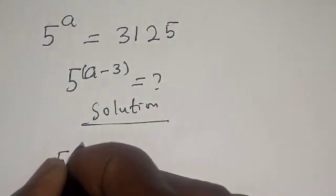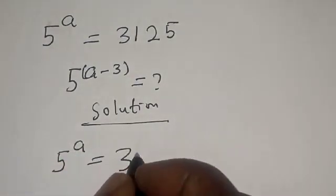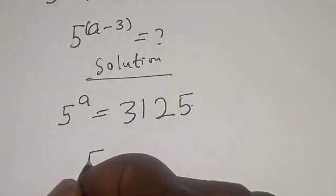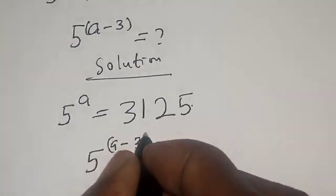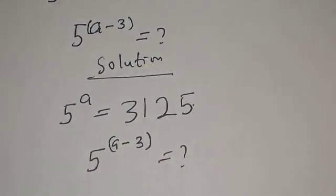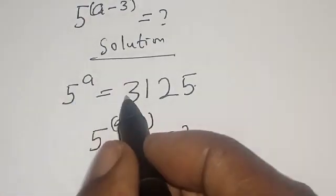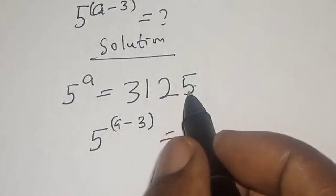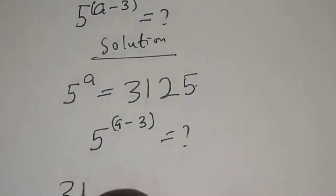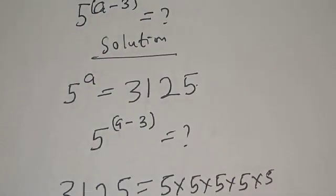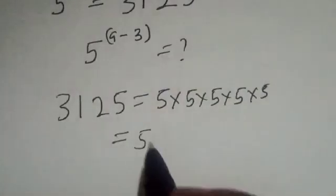Solution: we have the given equation 5 raised to power a is equal to 3,125, and we need to find the value of 5 raised to power a minus 3. Now, 3,125 is equal to 5 times 5 times 5 times 5 times 5.